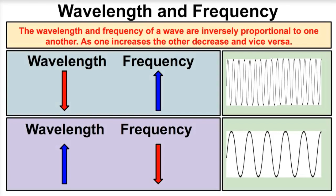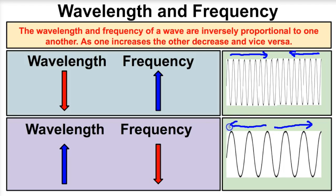One last important thing: the wavelength and frequency of a wave are inversely proportional. If we squeeze the wave together and decrease the wavelengths — make them shorter — the frequency increases. Waves with relatively small wavelengths have high frequency. If we stretch the wave out and increase the wavelengths, the frequency decreases. High frequency means short wavelengths, and low frequency means long wavelengths.